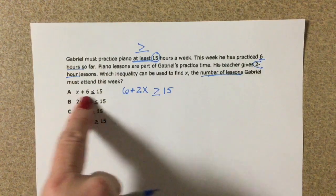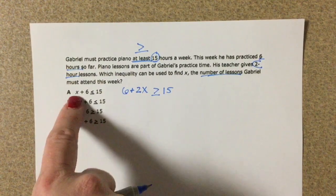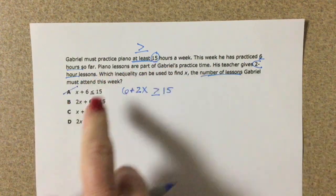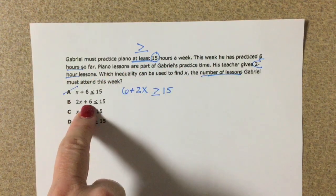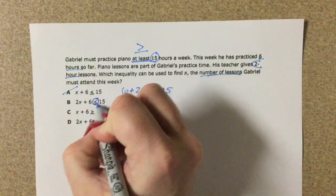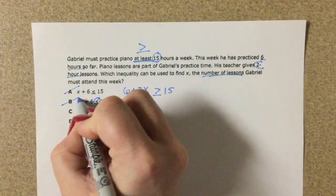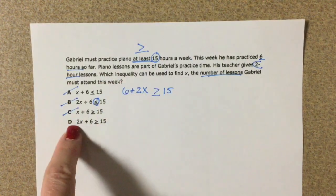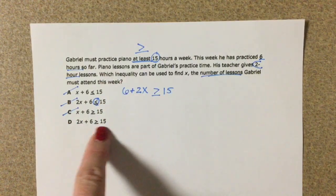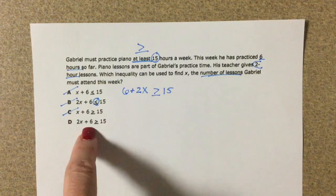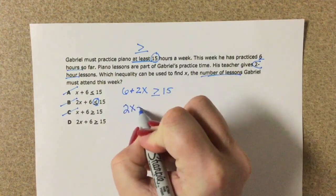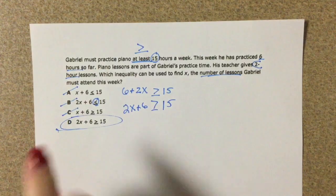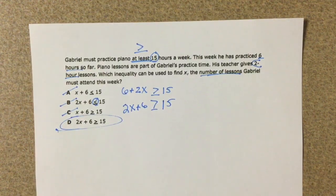Okay, so this first one here doesn't have the 2 in front of the x, so that's not going to work. This has got the 2x and the 6. My sign is backwards though. So I don't have the 2x. So 2x plus 6 greater than or equal to 15. This is the same thing, it's just the 2x and the 6 are switched around. So this inequality is going to match my words.